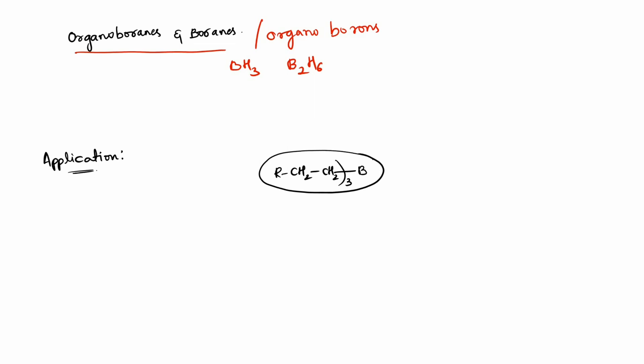These organoborines are also considered to be organometallic compounds. These organoborines can be used for different purposes — they can be used for preparation of alcohols as we observed in the hydration process in the previous video. They can also be used to prepare amines, haloalkanes, alkanes, or for dimerization.